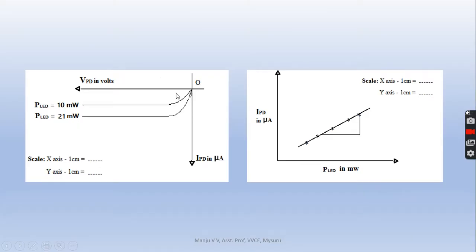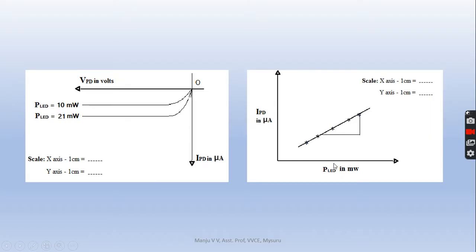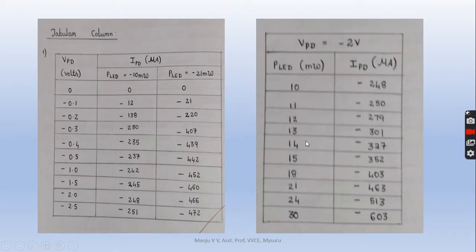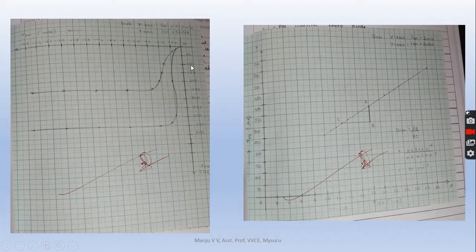Once the readings have been taken, we can plot the graph. This is taken in the negative quadrant as the voltage is negative, and the photocurrent is plotted along the y-axis — this is the kind of curve variation we obtain. Similarly, the second phase of the experiment shows a linear variation of photocurrent with respect to LED intensity. This is an example of already noted readings, and this is how you plot the graphs.